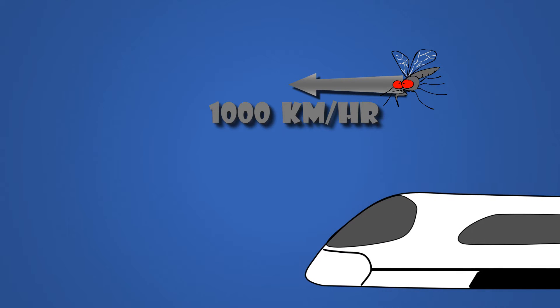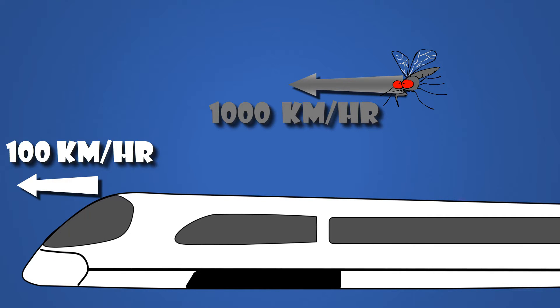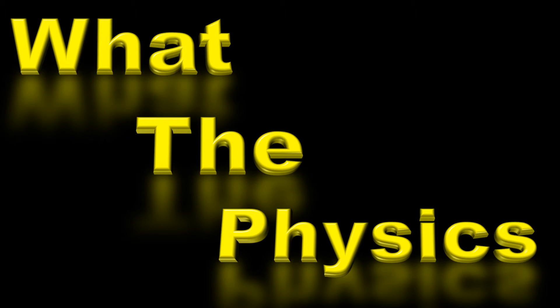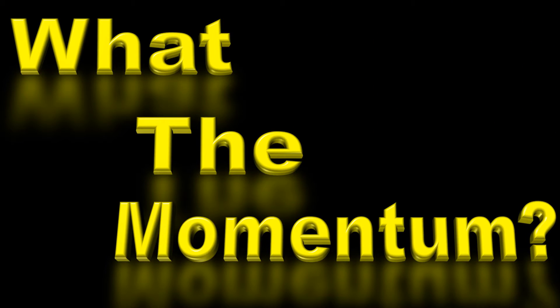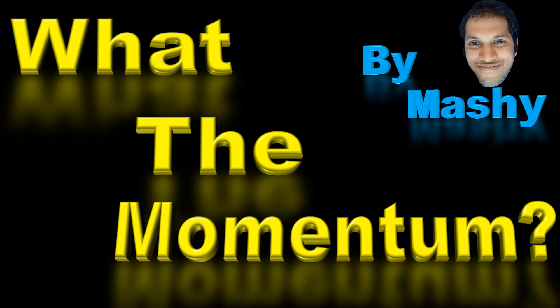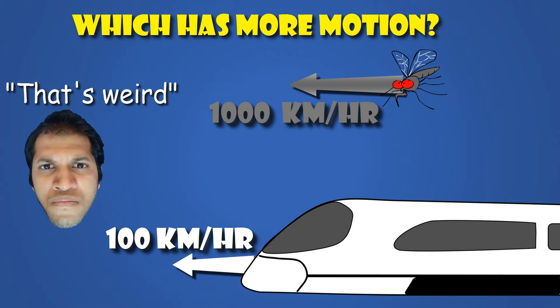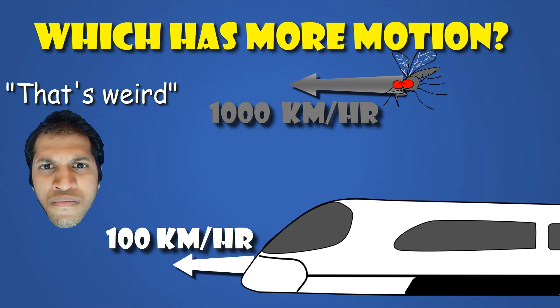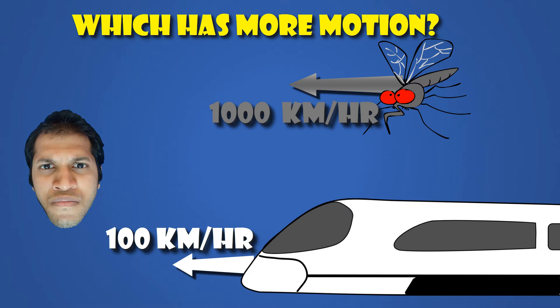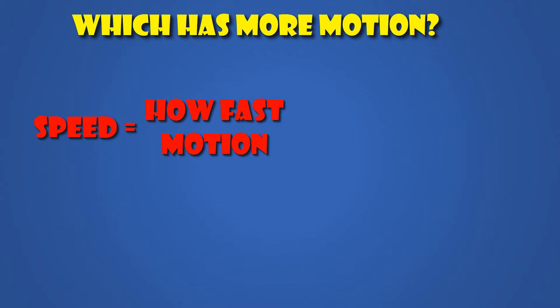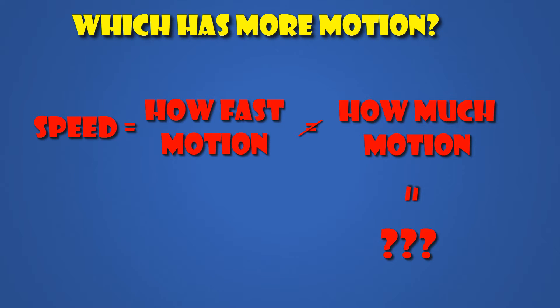If you compare a mosquito flying at a thousand kilometers per hour with a train going at a hundred kilometers per hour, which of the two has more motion in it? The question might seem a little weird, but I am asking which of them has more motion in it. The mosquito is traveling at a higher speed, but speed is just a part of the story. Speed tells you how fast the motion is, but it doesn't tell you how much the motion is. So how do we measure motion?